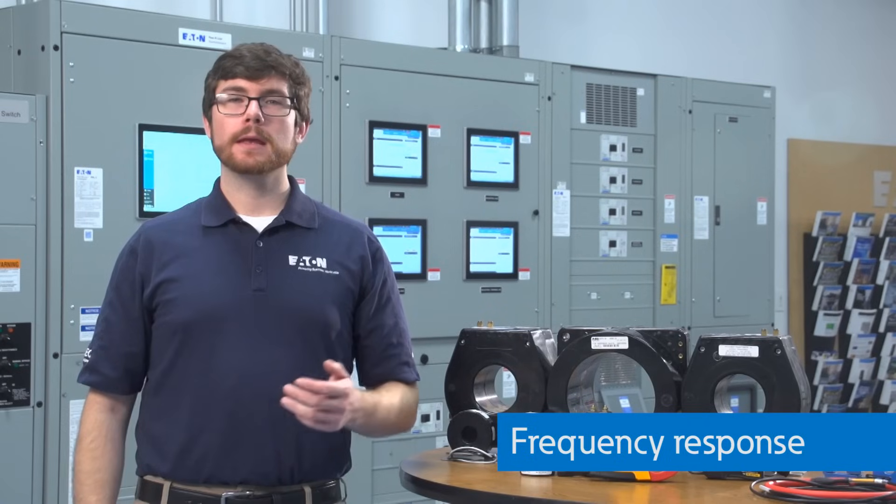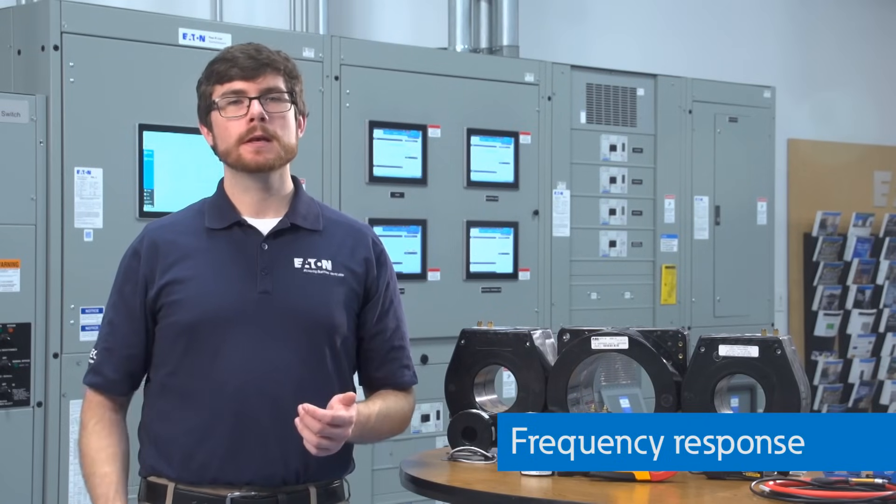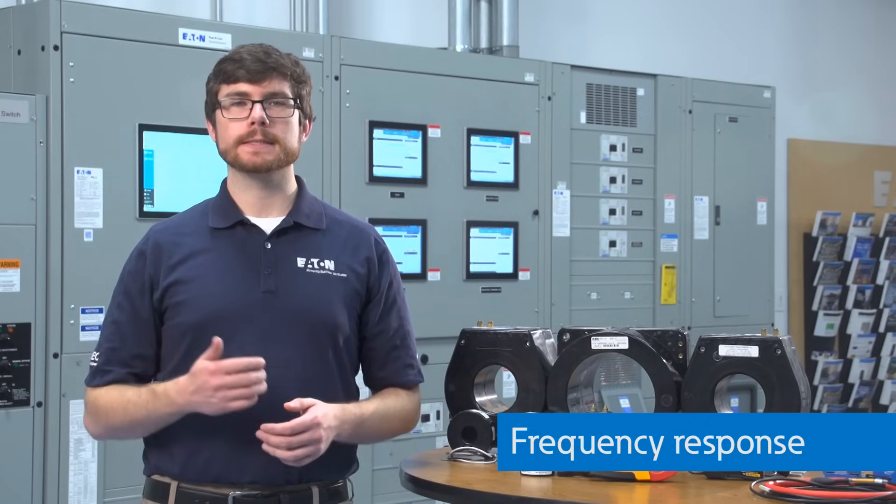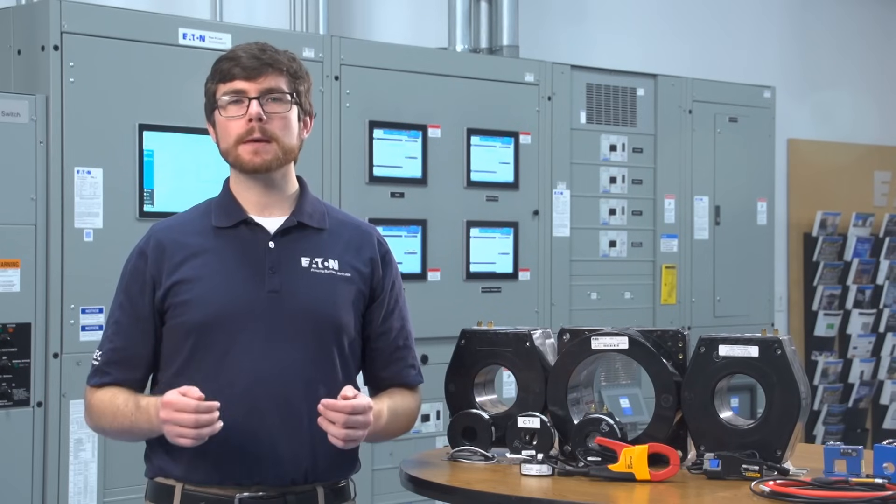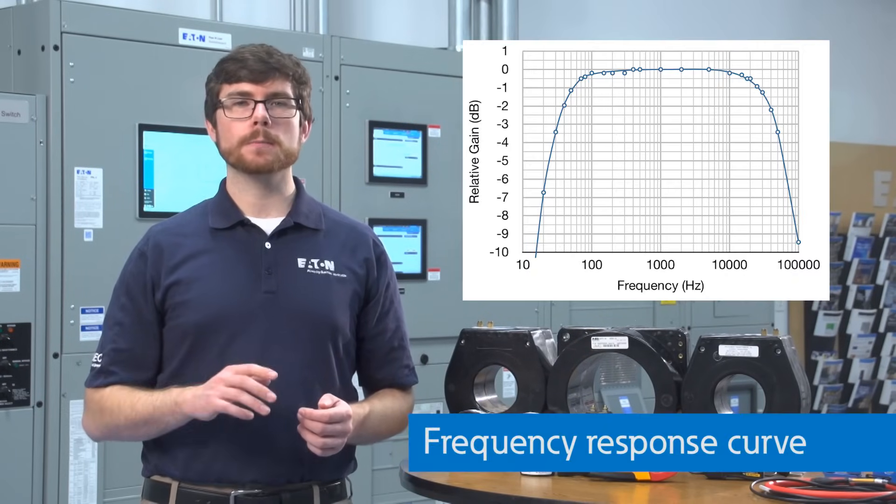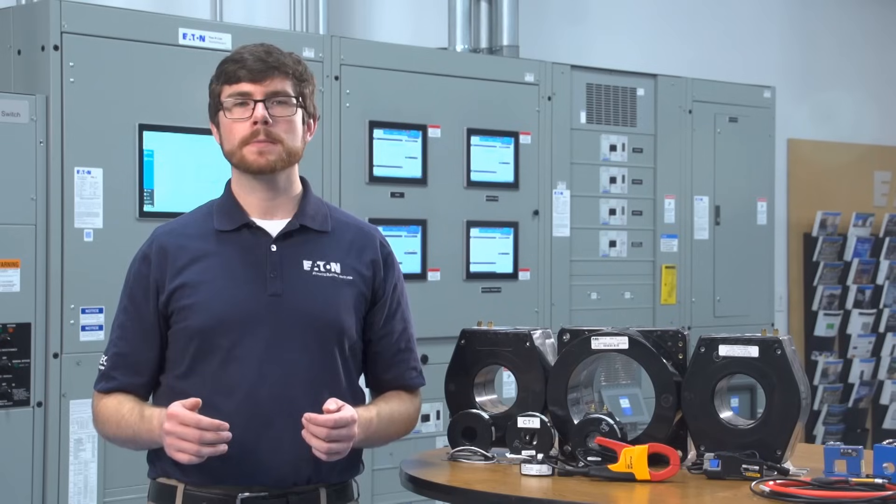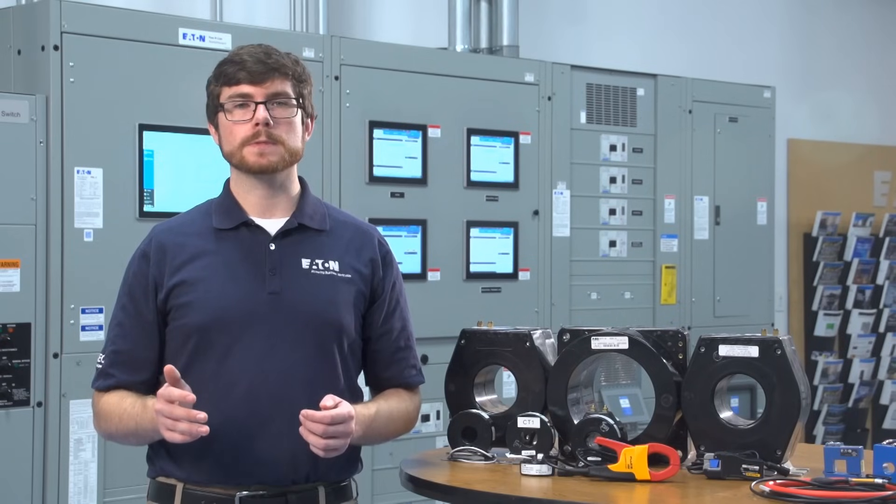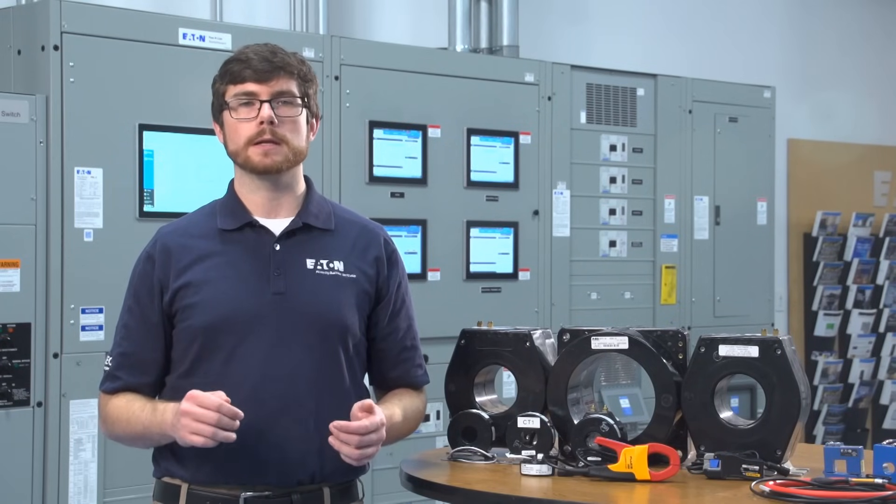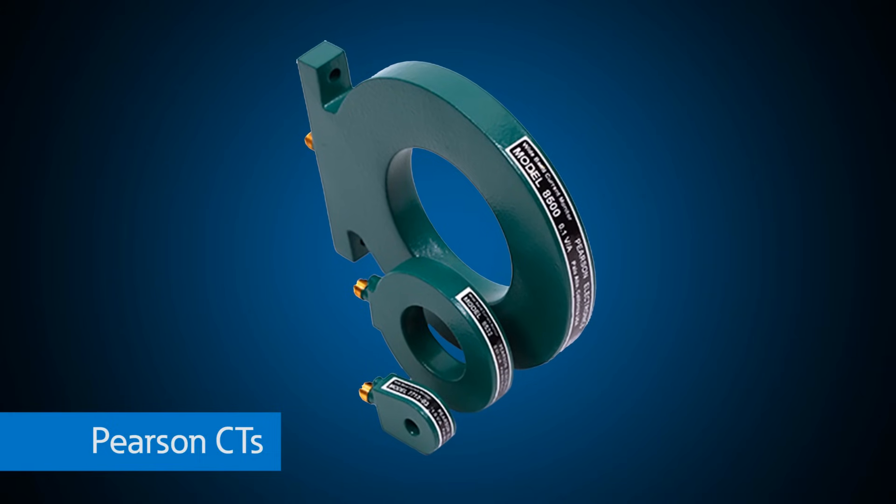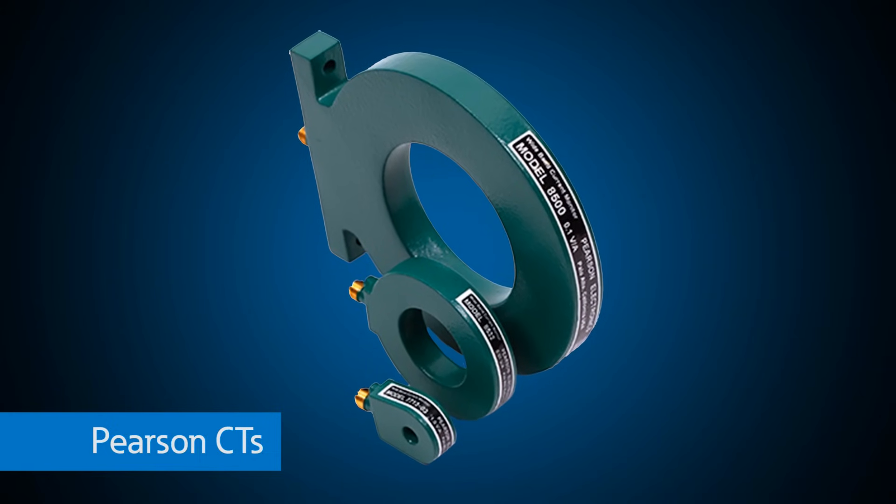For protection CTs, this is especially important because these devices can see 20 to 30 times rated current during faults. In addition to CT saturation, the maximum frequency range that a CT can measure is typically 3 to 5 kilohertz. For most applications, this is okay since the harmonics on the power system are typically within this range. However, for high frequency applications like transients in the hundreds of kilohertz or megahertz range, special highly accurate CTs like these Pearson CTs can be used.